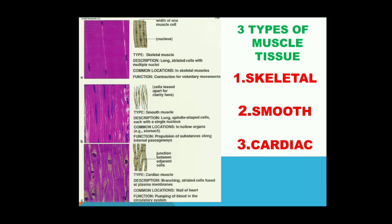To summarize: skeletal muscles work on our will so they are voluntary and show striations under the microscope so they are also called striated muscles. Smooth muscles have no striations, do not work on our will, and are involuntary. Cardiac muscles have striations but also have branching and intercalated discs, and they do not work on our will so they are also involuntary.